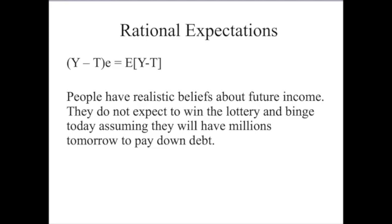We can modify the permanent income hypothesis by setting standards about how people could realistically form these beliefs, and the standard modification is that people need rational expectations. When you form your beliefs about your disposable income next year and the year after that, they have to roughly match reality — your expectations on the left need to be roughly equal to actual outcomes on the right. You don't have to get it right every year, since you might get laid off unexpectedly, but you have to have realistic beliefs about the probability of getting laid off. What we mostly want you to get out of this video is the understanding of the permanent income hypothesis and the marginal propensities to consume out of permanent and temporary income.